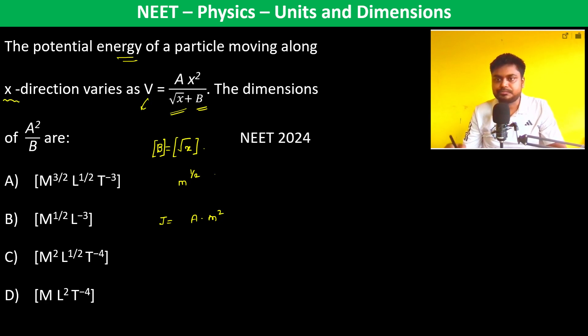Ax². Therefore, x has to be in meters. So A times meter² divided by meter^(1/2).